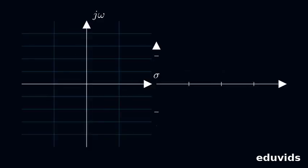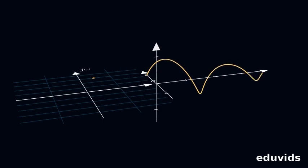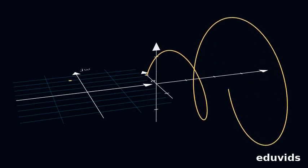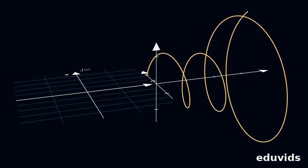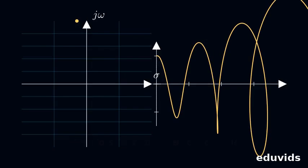Every point on the complex s-plane corresponds to a unique exponential function, e to the minus s t. Moving along sigma changes decay. Moving along omega changes the oscillation frequency. What does the sigma component of s control in this exponential kernel?